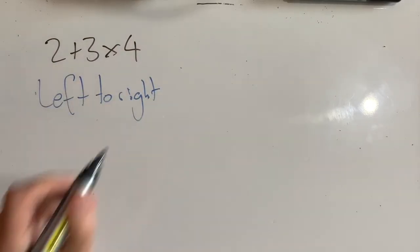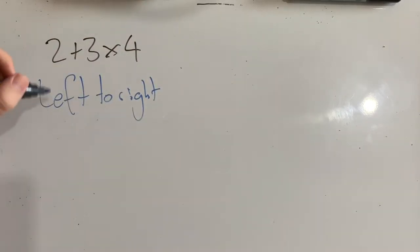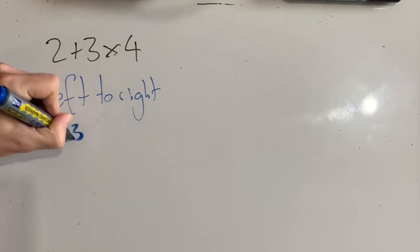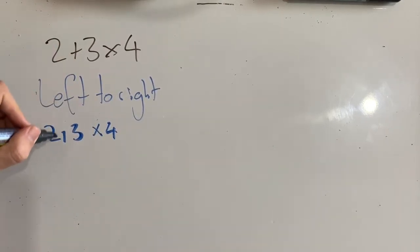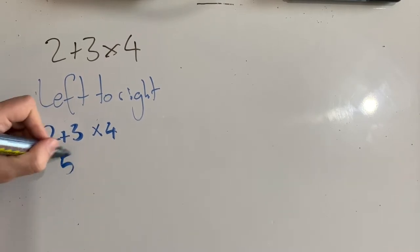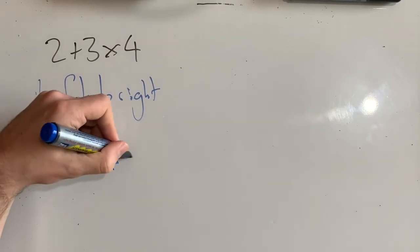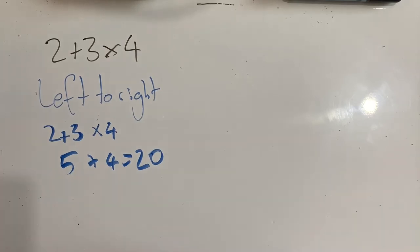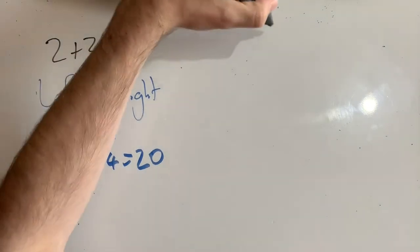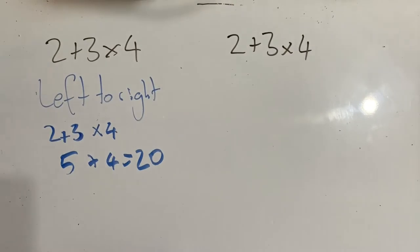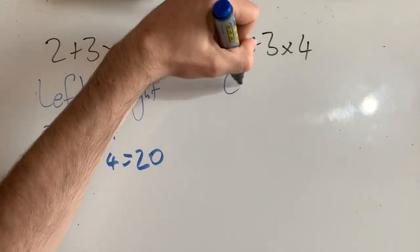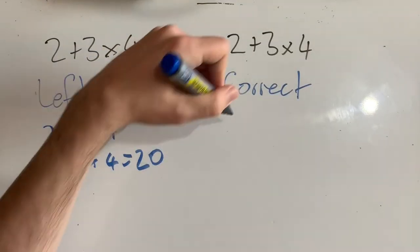If I decided to work left to right, I would do the 2 plus 3 first, which would be 5 times 4 is 20. But this is actually not the correct way to do it. If I was to do it by using multiplication first, so let's write this out again, 2 plus 3 times 4. If I was to do it the correct way, I would actually do the multiplication first.